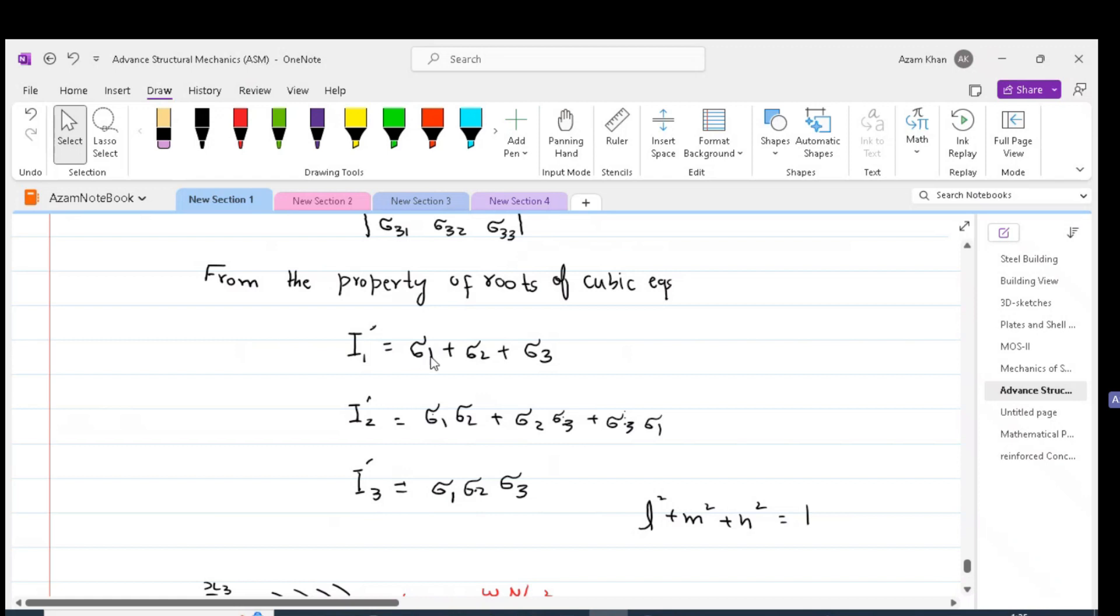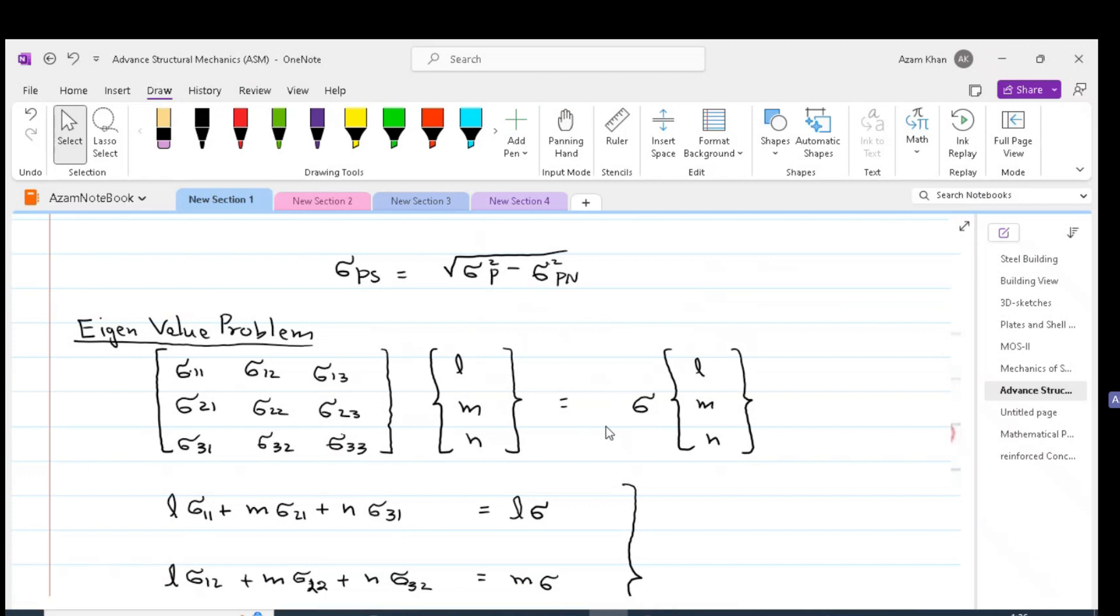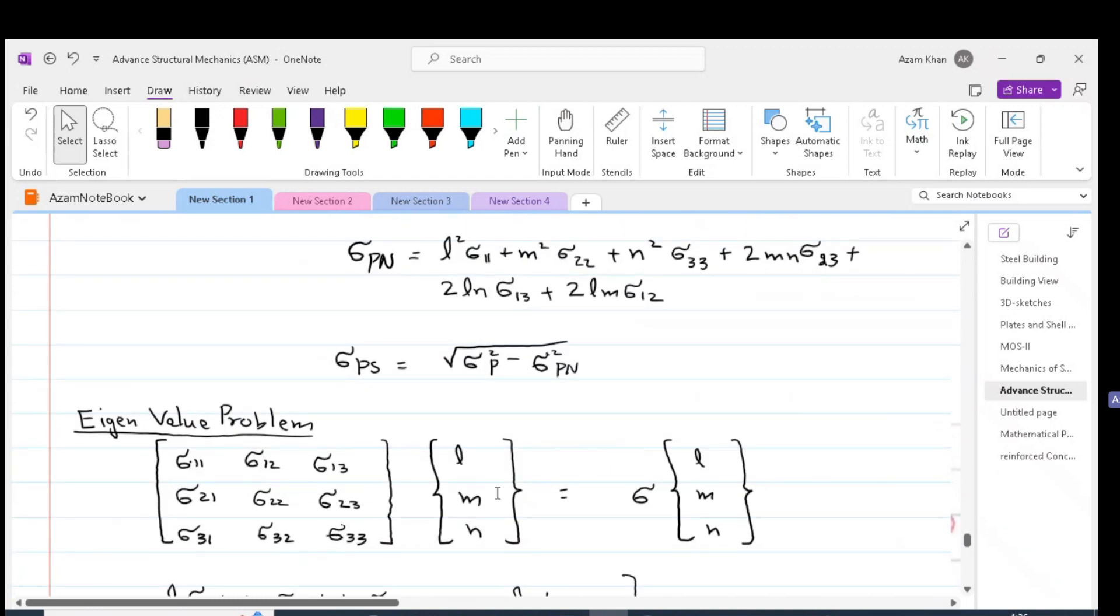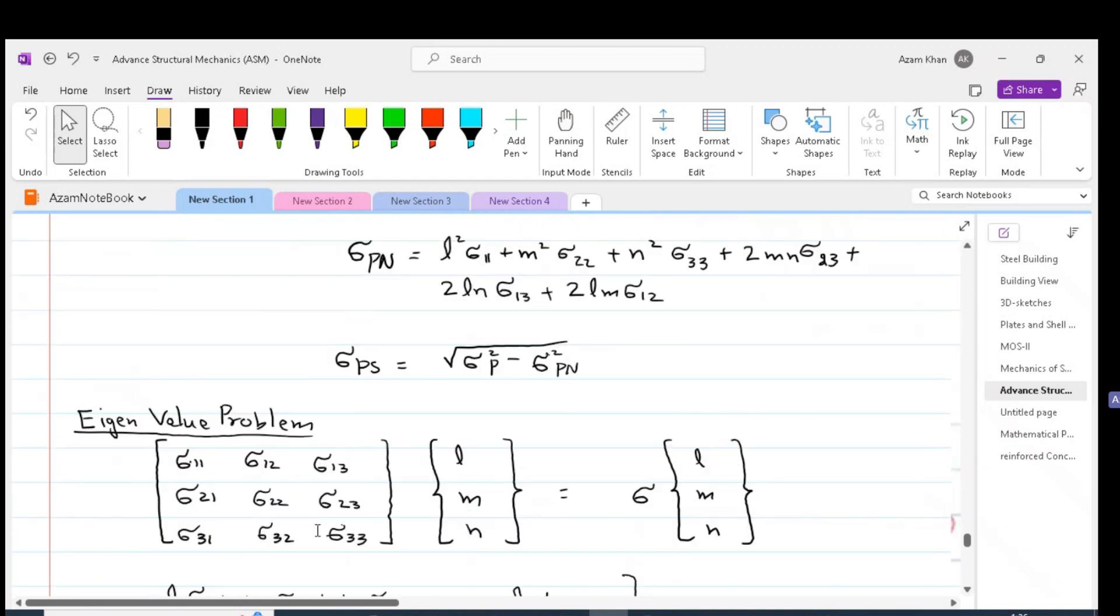Please note that the scalar sigma_1, scalar sigma_2 and scalar sigma_3 are the eigenvalues of this equation. Once the eigenvalue is found from the characteristic equation, they can be plugged back into the eigenvalue problem.